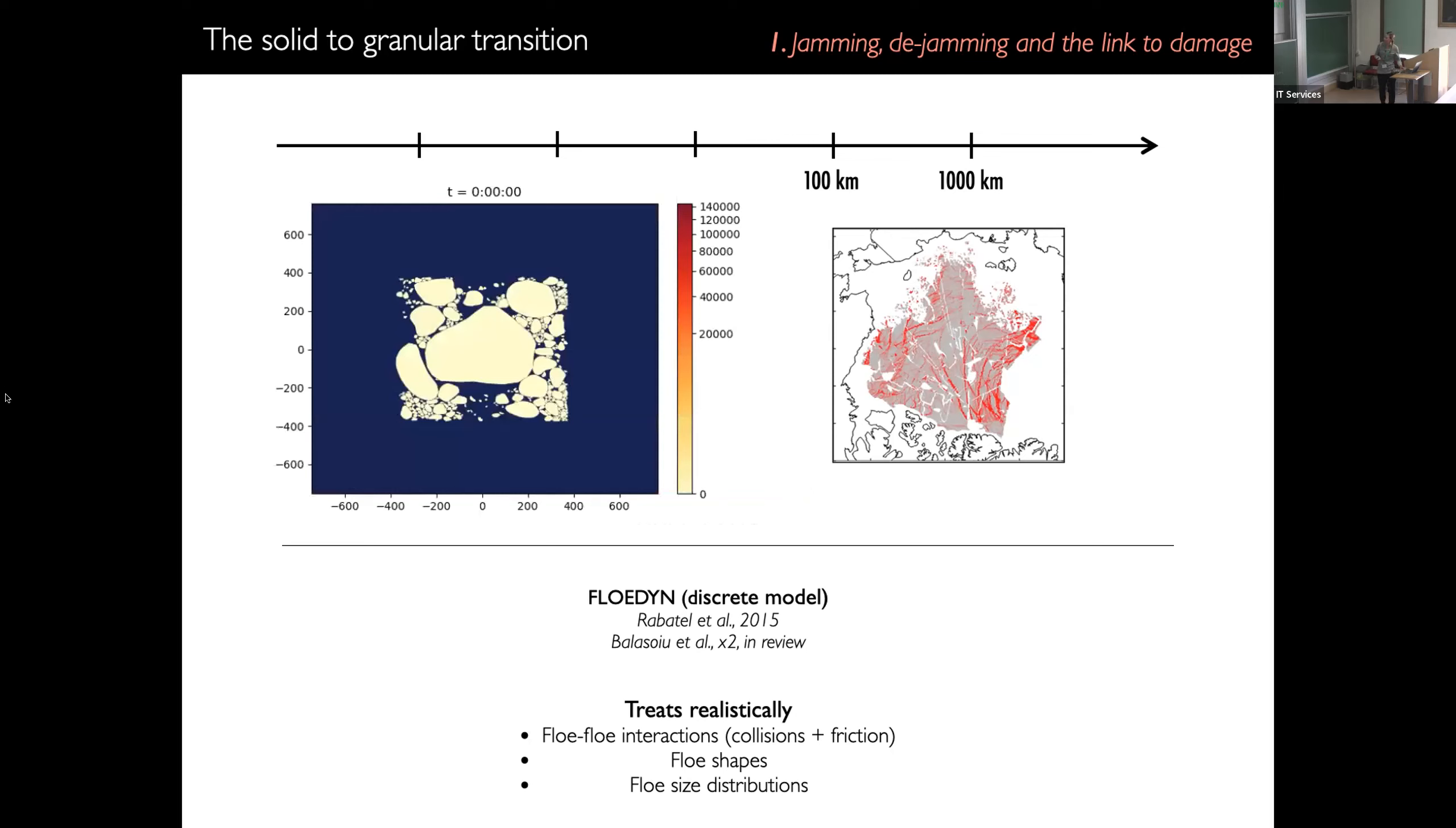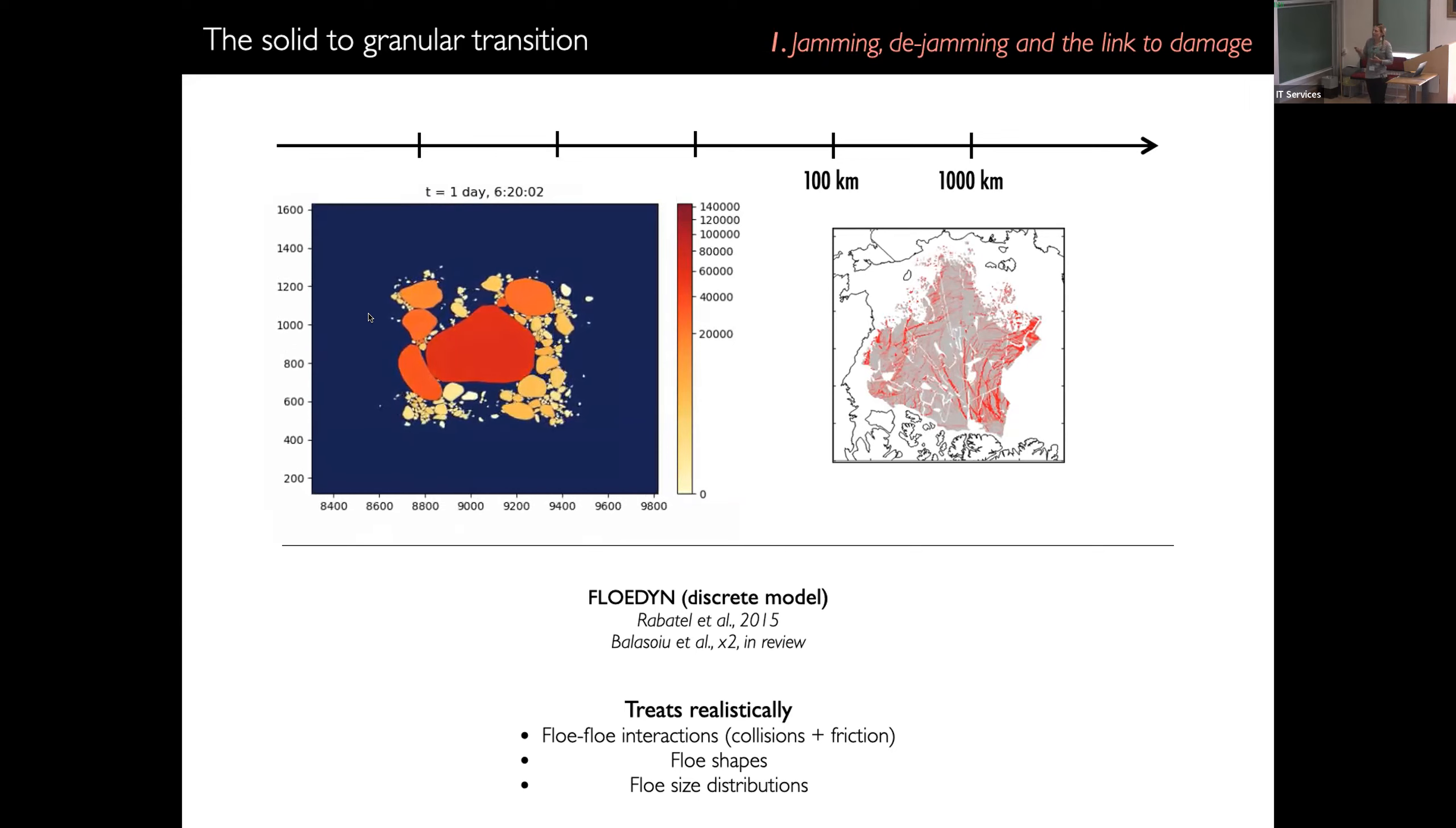It can be initialized from observation of floe shapes, from observation of floe size distribution. Also it tries to treat the most realistically possible floe-floe interactions. So this means that it tries to avoid interpenetration as we have usually in other DEM models. This is a small animation of what Flodin can do. So here you just have an assembly of floes. I think the first thing that's applied here is just a wind vortex. So you see that the floes can move, they collide. Actually, the color gives you the stress, I think, that's stored in the floe. So it's due to the number of collisions that they're experiencing.